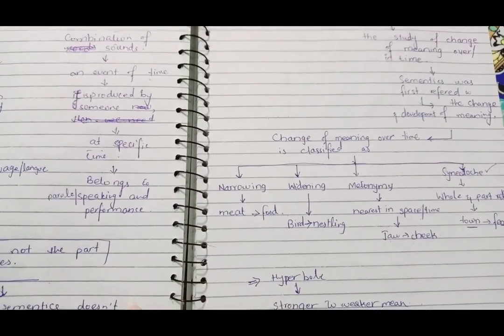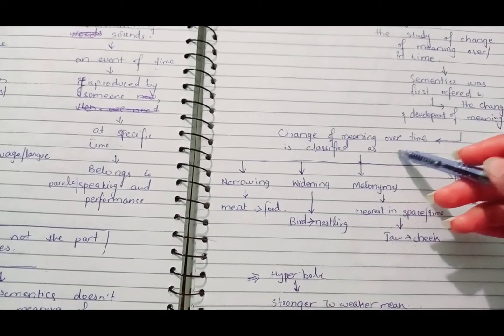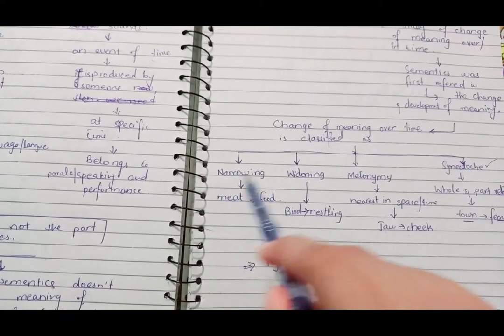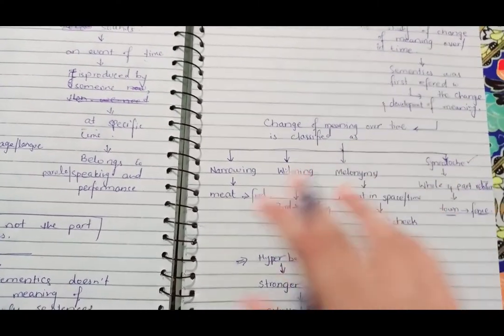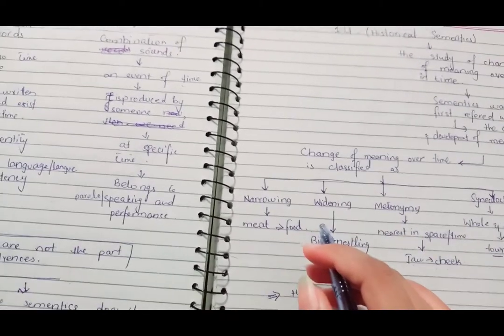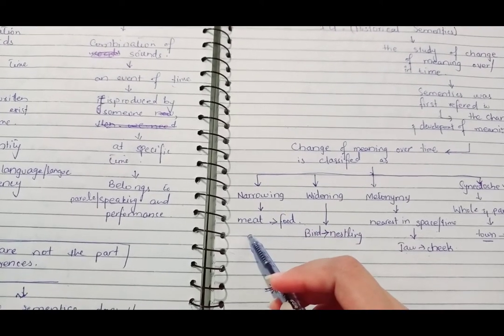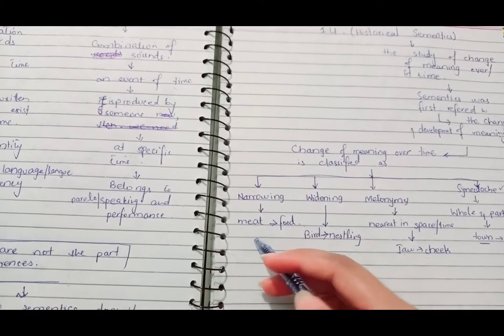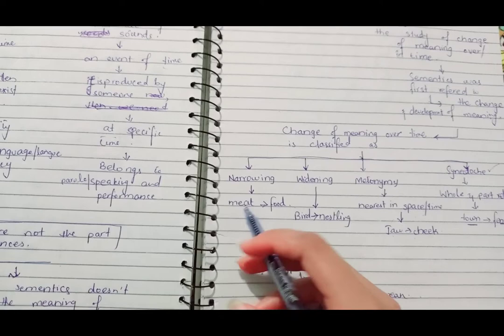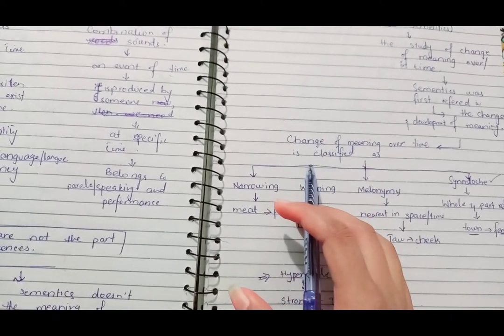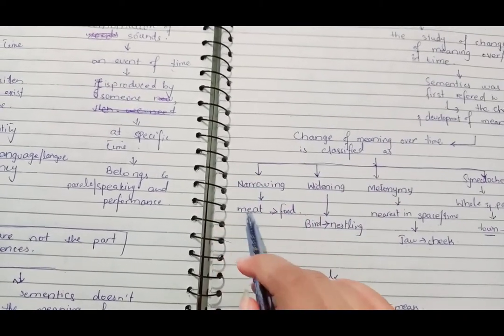Changing of meaning over time is also classified as different terms, for example: narrowing, widening, metonymy, synecdoche, hyperbole, etc. These terms are somehow related to the development of meaning with the passage of time. Narrowing means, for example, previously in history, meat was used for all types of food, but now it is considered only the flesh of animals or the edible flesh.